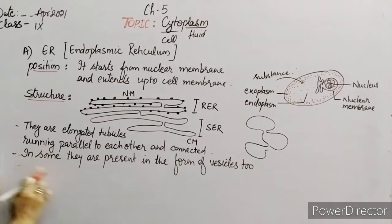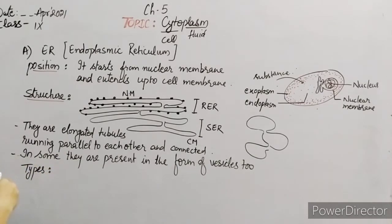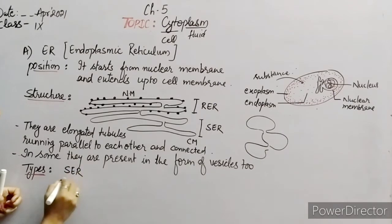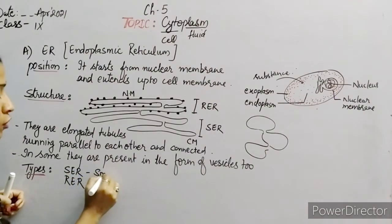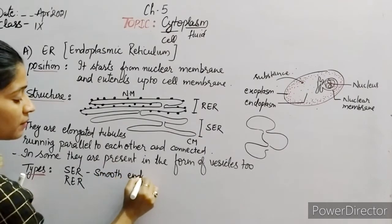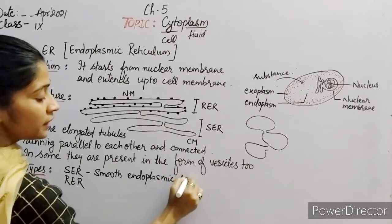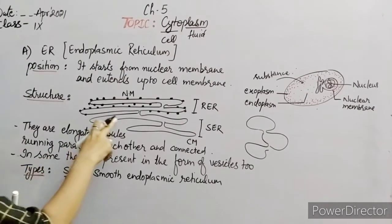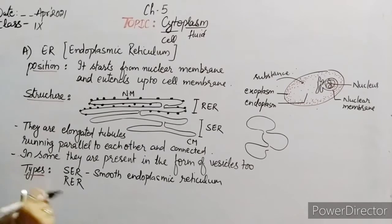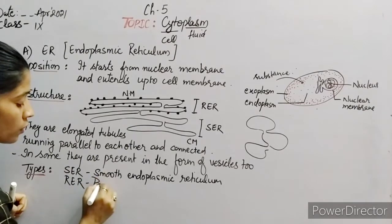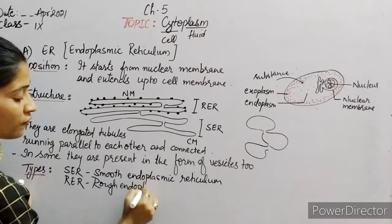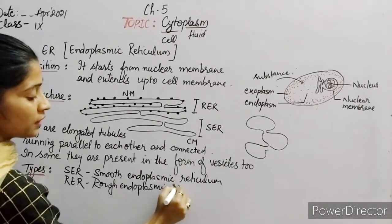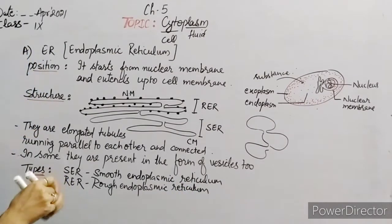Next point is the types of ER. ER is basically of two types: SER and RER. SER stands for Smooth Endoplasmic Reticulum — as they do not have any granule over their surface, the surface is smooth. RER stands for Rough Endoplasmic Reticulum.